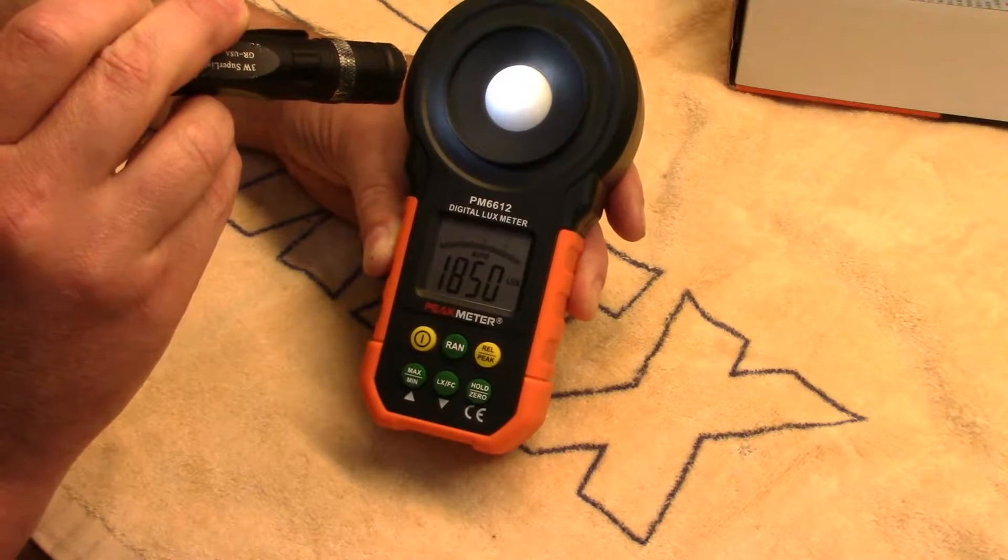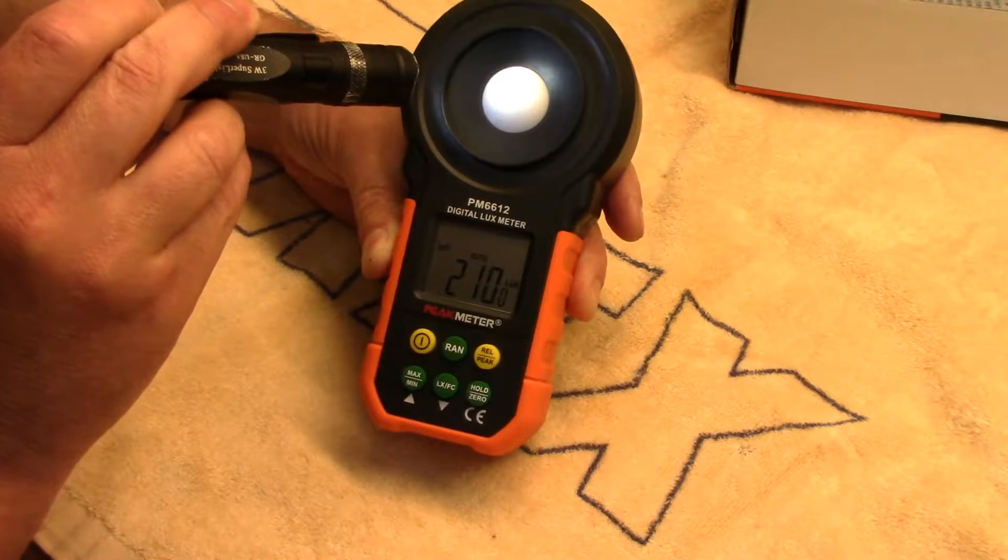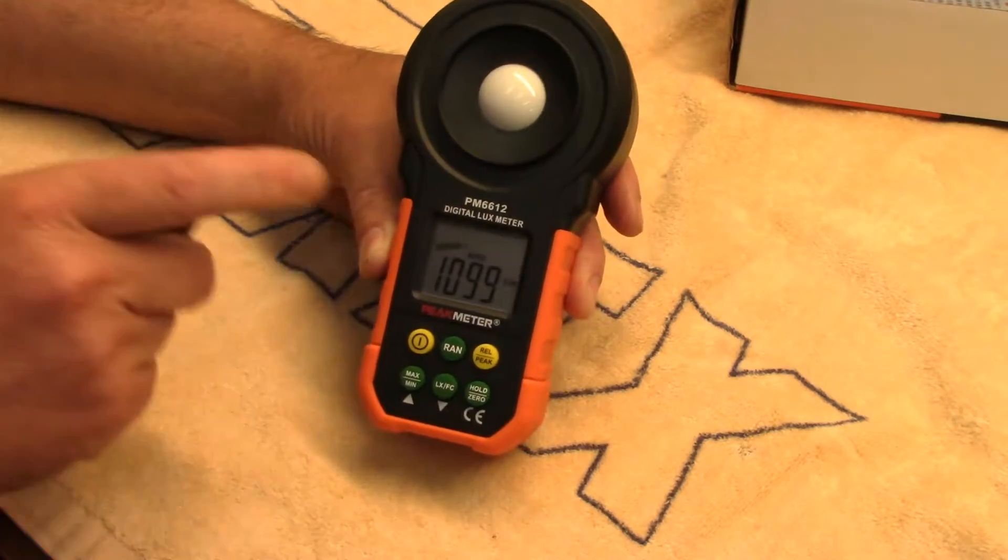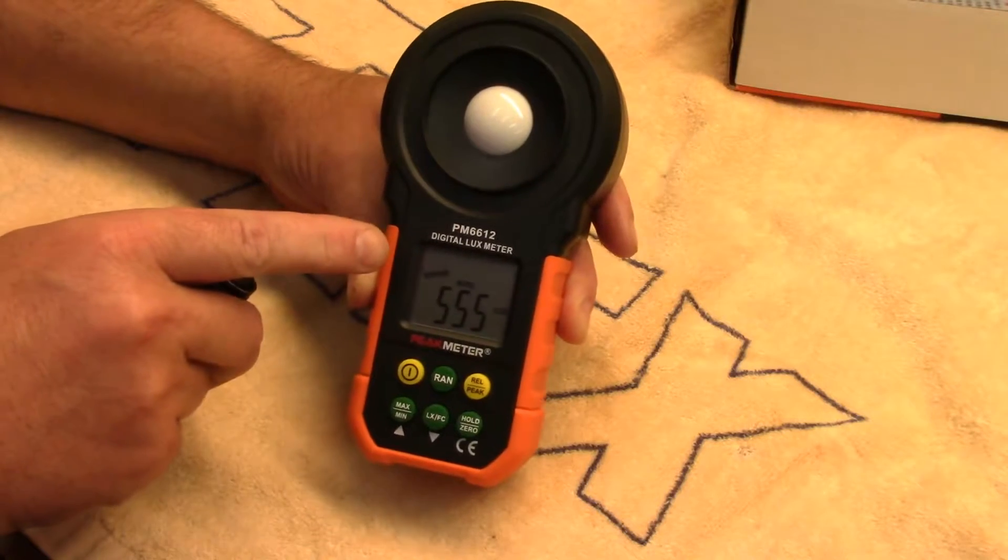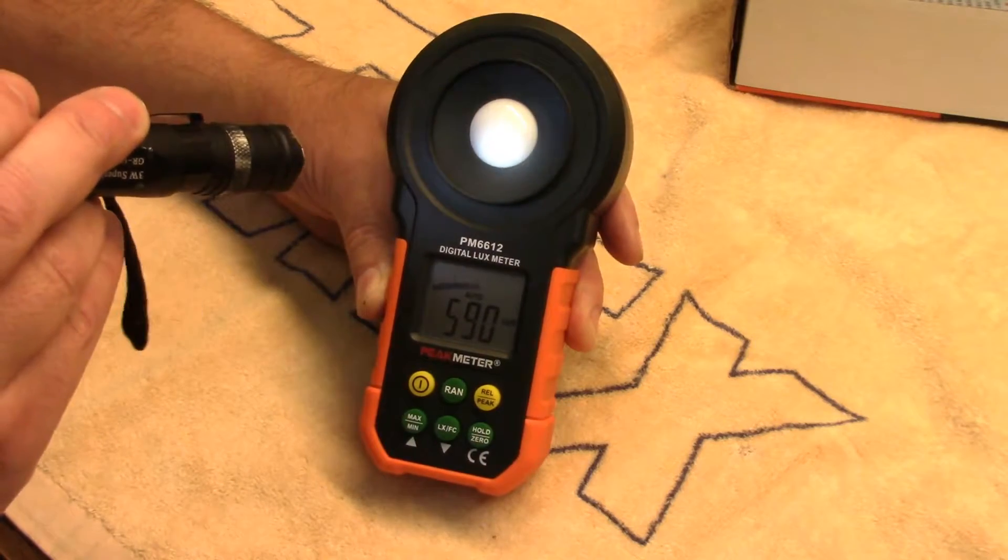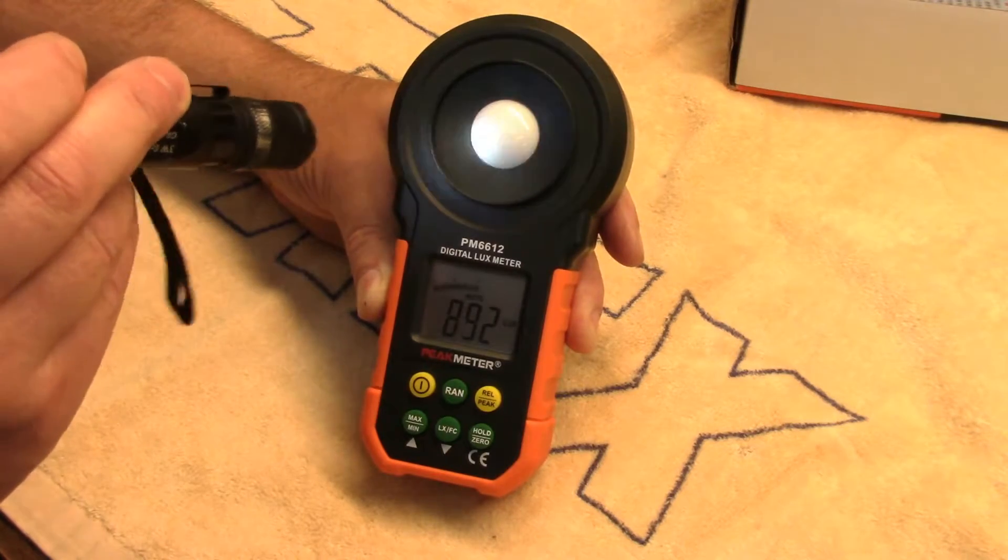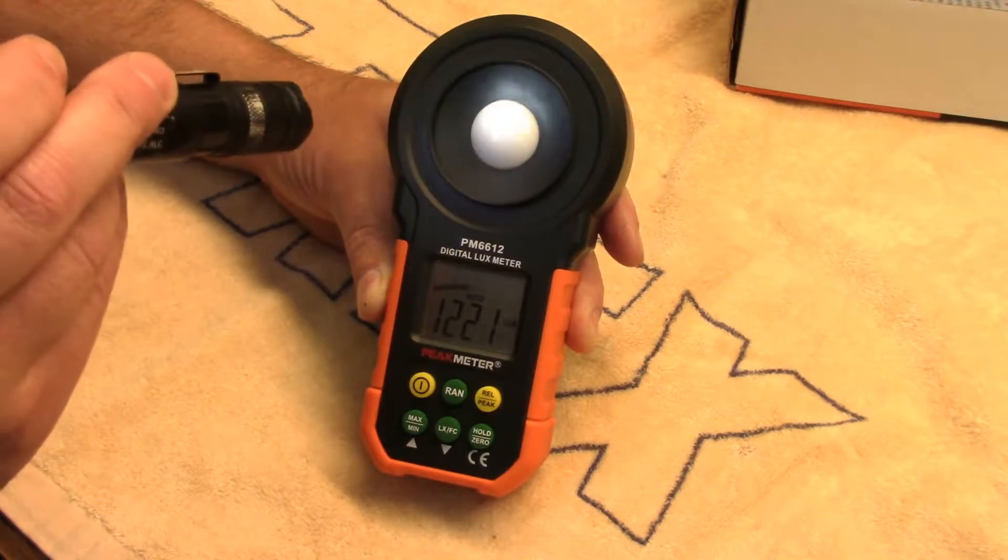The other neat thing is it's actually got a bar graph. Not too sure why you'd want that on a light meter, you're usually not too interested in rapidly changing signals like you would be on a digital multimeter, but that's kind of cool.